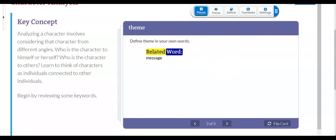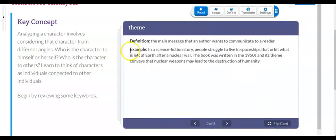Related word. Message. Example. In a science fiction story, people struggle to live in spaceships that orbit what is left of Earth after a nuclear war. The book was written in the 1950s and its theme conveys that nuclear weapons may lead to the destruction of humanity.